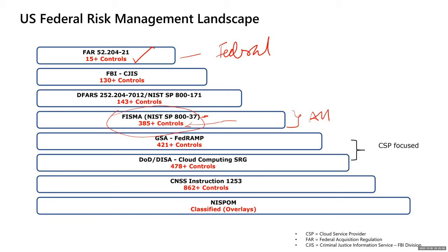Within the FBI, there is the CJIS — the Criminal Justice Information Service — with 130 controls focused on law enforcement organizations and criminal justice agencies' access to criminal justice information. FBI is within the Justice Department, so that gives law enforcement and criminal justice agencies access to that information. If you want to look into this history, go back to post-September 11th when the Patriot Act and things like that were passed for information sharing.